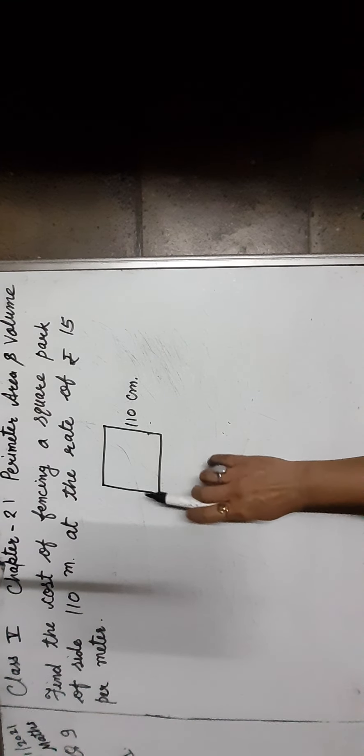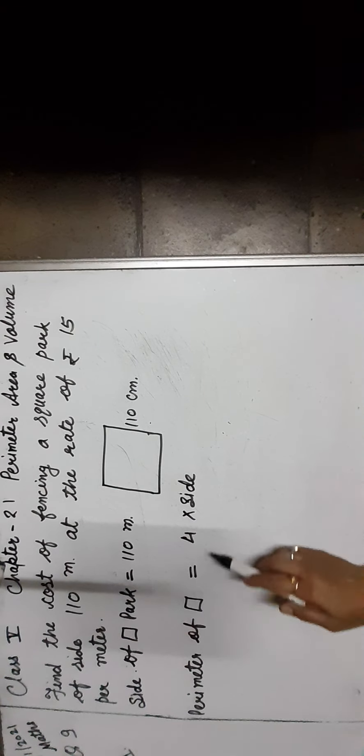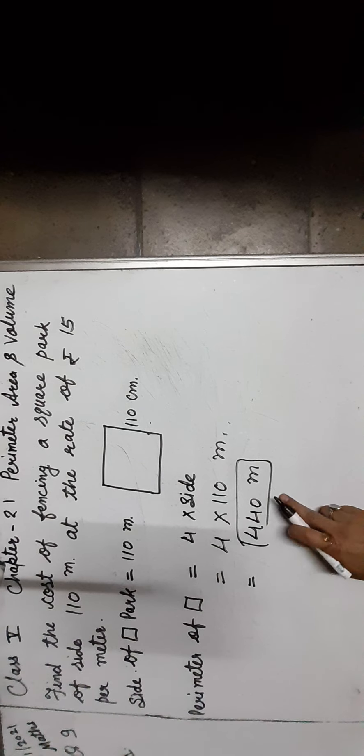Question number 9: Find the cost of fencing a square park of side 110 meters at the rate of rupees 15 per meter. To find out the cost of fencing the square park, first we find the perimeter of the square. The side of the square park is 110 meters. Perimeter of square is equal to 4 into side, so 4 into 110 meters equals 440 meters. Thus, the perimeter of the square is 440 meters.